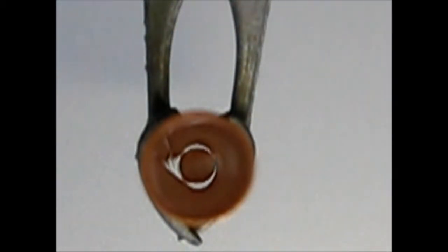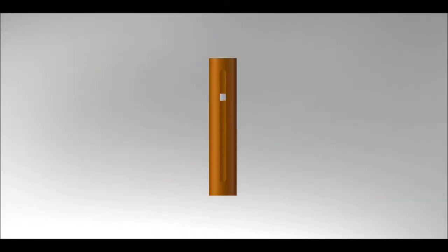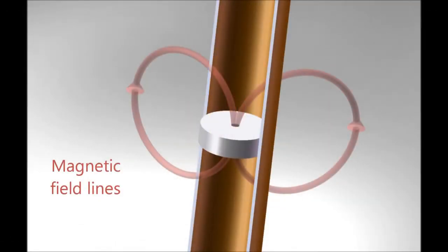Using the following cartoons, we can explain the processes that are actually happening. Again, we see the magnet dropping through the tube. The red lines are added to represent the magnetic field produced by the magnet. As the magnet falls, the magnetic field in the copper tube changes.